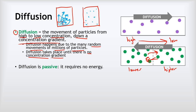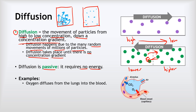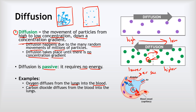Diffusion is passive — it requires no energy. This just happens because of the movements of those particles, but it doesn't need energy to drive it forwards. In terms of examples, in humans in our lungs, oxygen diffuses from the lungs into our blood. This alveolus — a little air sac — is where we have millions of tiny air sacs in our lungs. The oxygen in the air diffuses from the lungs into the blood, and equally the waste carbon dioxide in our blood diffuses from the blood back out into the lungs.